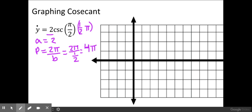So the next thing we want to do is figure out our scale for the x-axis which is taking our period and dividing that into four equal parts. We get π. So that's how we're going to label the x by multiples of π: π, 2π, 3π, and then 4π.